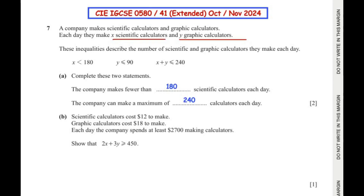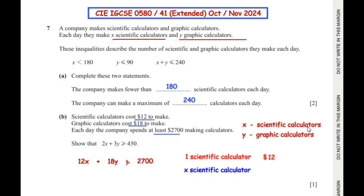Scientific calculators cost $12 to make and graphic calculators cost $18 to make. Each day the company spends at least $2700 making calculators. We need to show that 2x + 3y ≥ 450. Let's build a relationship between the number of calculators made each day and the cost. Here x represents scientific calculators and y represents graphic calculators.